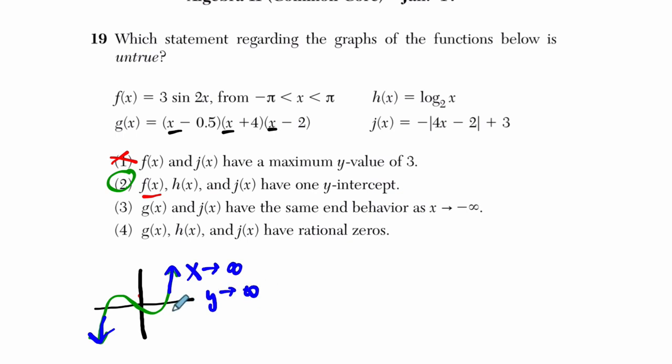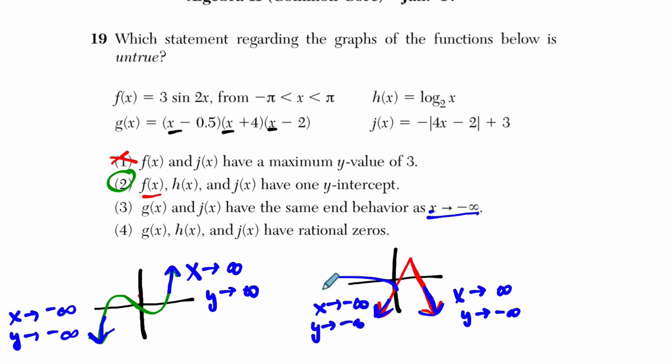As X approaches positive infinity, Y approaches positive infinity. So as X gets bigger and bigger and bigger, the graph goes up. As X approaches negative infinity, Y also approaches negative infinity. That's the behavior of G of X. For J of X, it does have the same end behavior because wherever this absolute value function is, we know it's upside down, kind of crunched a little bit horizontally. The end behaviors are the same. Here, right? Here, on this side, of course, end behaviors are different, I should say. As X approaches positive infinity, Y approaches negative infinity. That's the opposite of here. But they're saying as X approaches negative infinity. So as X approaches negative infinity, Y also approaches negative infinity. And that is the same end behavior as X approaches negative infinity. But that's a true statement. We have a false statement.